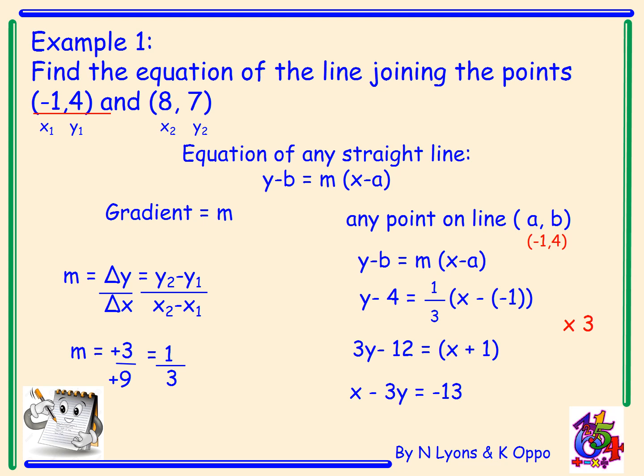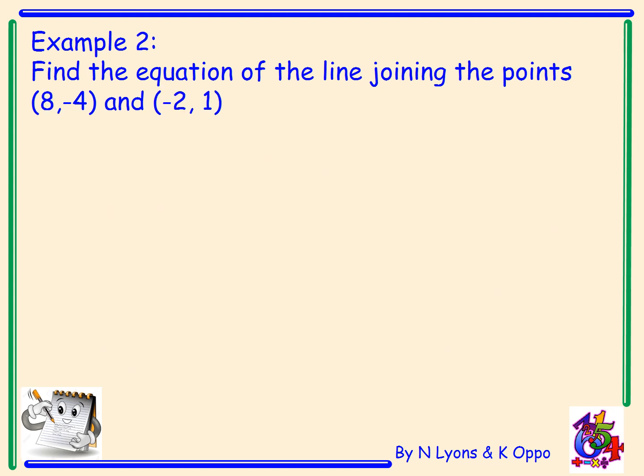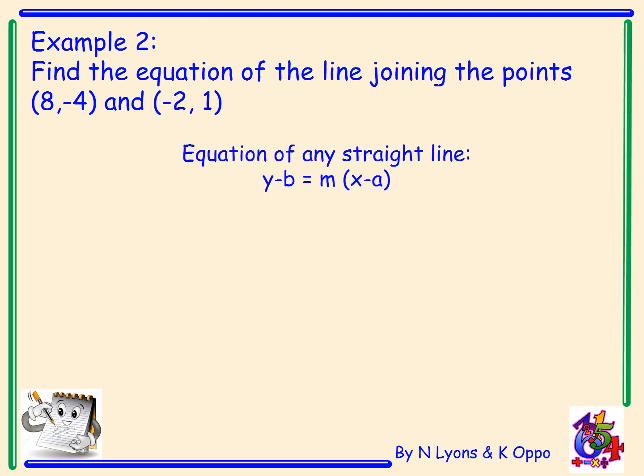Let's try another example. Example two: find the equation of the line joining the points (8, -4) and (-2, 1). It's the same as the last example. The equation of any straight line is given by y minus b equals m(x minus a). Now that equation, remember, you have to know it for the exam. It's not given on your formula sheet.